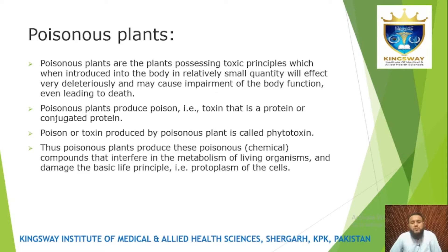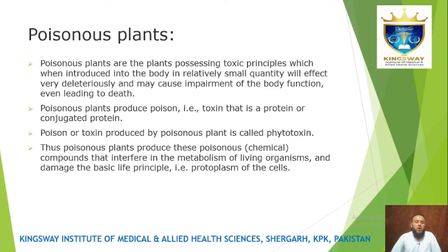A poison or toxin produced by a poisonous plant is called phytotoxin, which is a protein or conjugated protein. The plant source from which it is obtained is also referred to as a phytotoxin source. These poisonous plants produce poisonous chemicals that interfere with the metabolism of the living organism and damage the basic life principles.